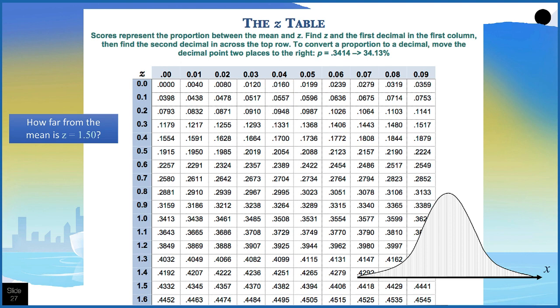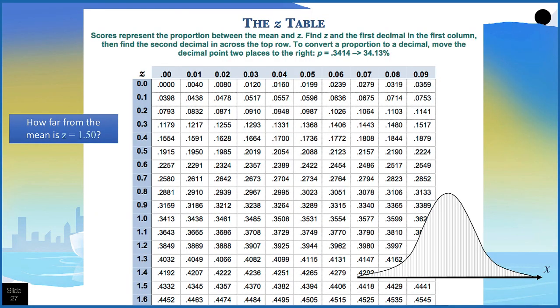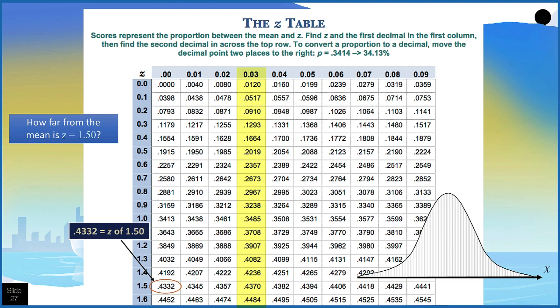If we want to know the proportion of scores that fall below a Z of 1.50, we need to know the scores between the mean and our Z score of 1.5. To answer that, we go to the Z table — there's one in your textbook, and there's also one in the spreadsheet I'm going to show you. We're looking for a Z of 1.5, so we work down the first column until we find 1.5. For Z = 1.50, we look at the first column and see a value of 0.4332. If we were looking for a Z of 1.53, we'd move across to the column for 0.03; for 1.57, we'd use the column for 0.07.